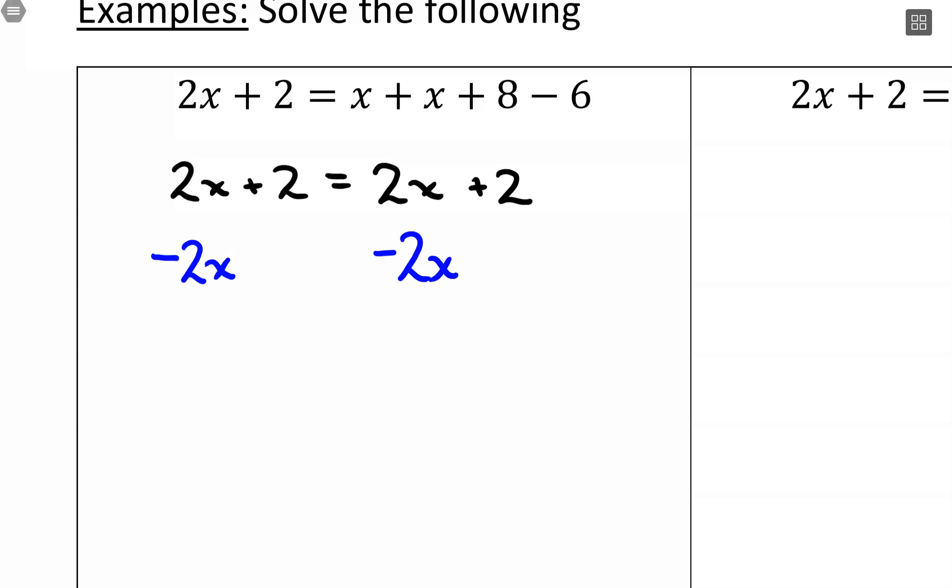When we do this, and this is where we can see that it's going to be a special case, is that our variable terms completely cancel out. This would make a 0, and this would also make a 0. So all I would end up with is 2 equals 2.